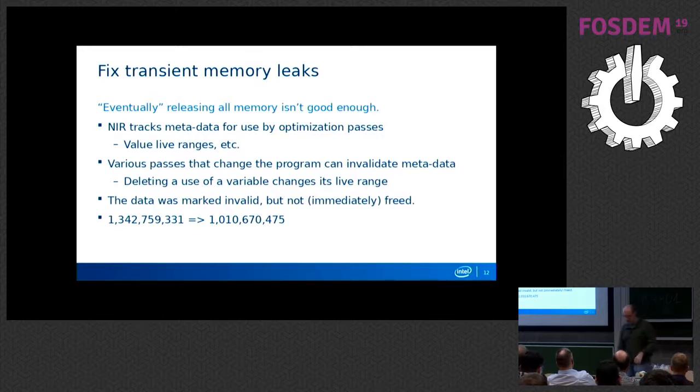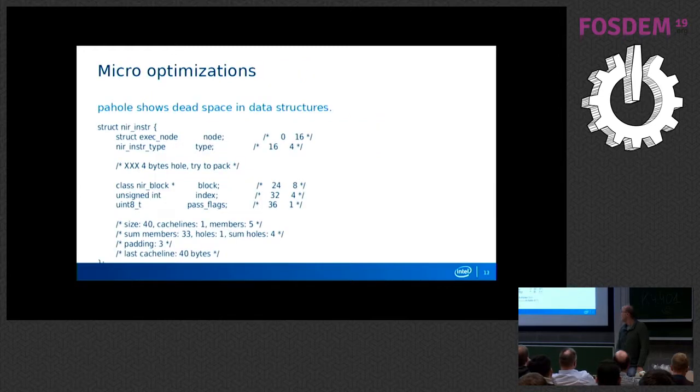And by really digging down pretty far into the massif data, I found, I kept noticing that there was some of the metadata that showed up at points in compilation where we were never going to need that metadata again. And it turned out that it still existed there because it got marked as invalid and then no one released the memory. So changing literally added four lines of code and that cut another third of a gigabyte out of the peak memory usage from the worst case shader. And then just to continue on looking at low-hanging fruit, I did a couple of micro-optimizations using pahole or path hole or however you want to pronounce it. It's kind of a cool program.